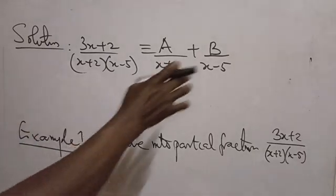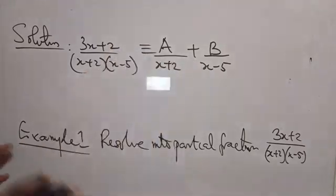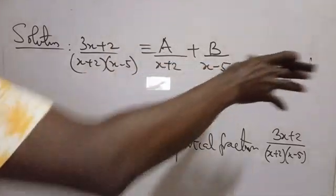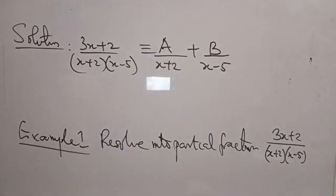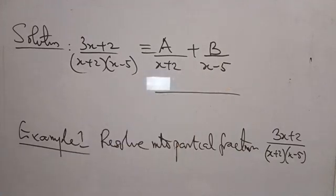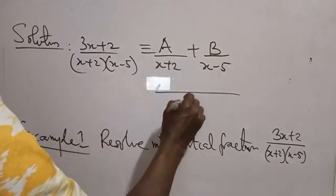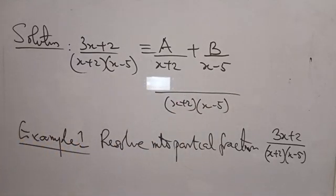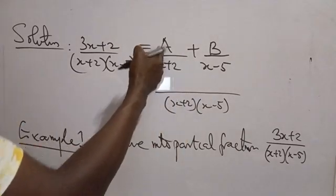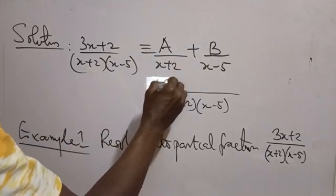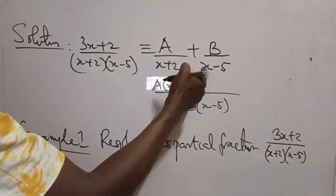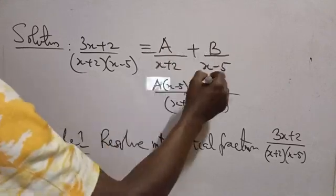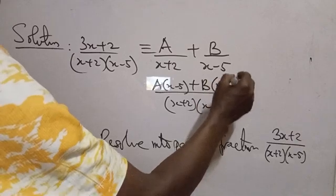Our target is to resolve this into partial fractions, so what we need to do now is deal with the expression on the right-hand side. Let's find the LCM. The LCM is (X plus 2)(X minus 5). Once you have taken this as the LCM, just cross-multiply. So you have A into (X minus 5) plus B into (X plus 2).